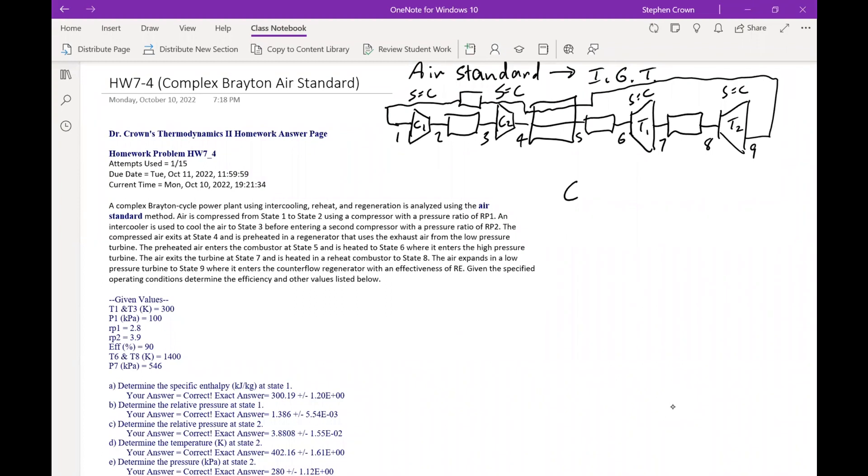So for cold air standard, we had that H equals CPT. We're not going to use cold air standard for the air standard method. We have that the enthalpy is a function of temperature from the ideal gas tables. The other thing was T2 over T1 equals P2 over P1 to the K minus 1 over K. We use that for the cold air standard. We will not be using that for the air standard. We'll be using PR2, which is a function of T2 over PR1, which is a function of T1 equals P2 over P1.